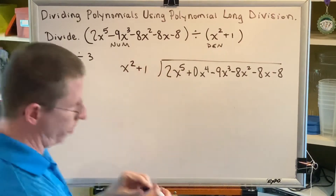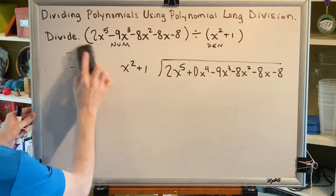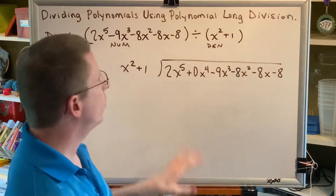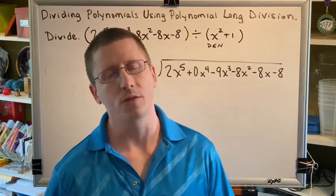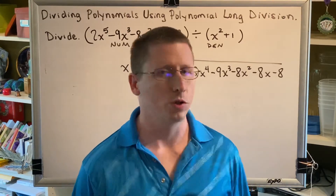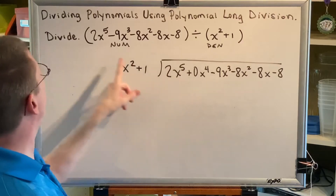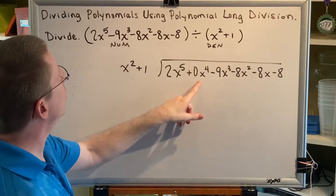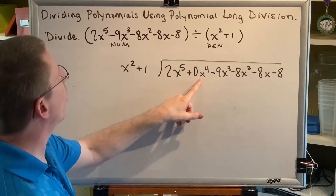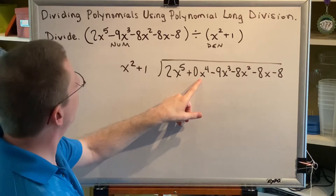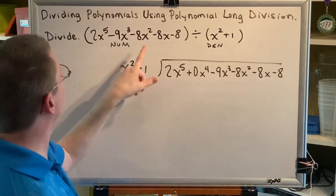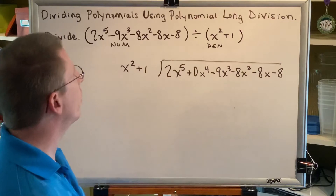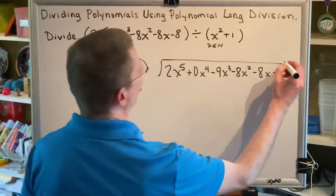You might have noticed that when I wrote the numerator I put in a 0x to the fourth. Why did I do that? Polynomial long division requires you to have a column for all types of terms that you might encounter while creating your solution. So if you skip a term — like going from an exponent of 5 to 3, skipping right over 4 — you need to put the missing term with a coefficient of 0 in your long division problem. Another place you might put a 0 would be at the end, if your original numerator stopped at minus 8x, you would put a plus 0 after it so there is space for a constant term.